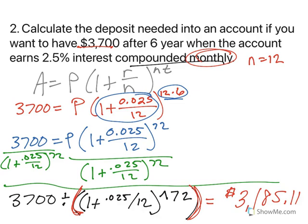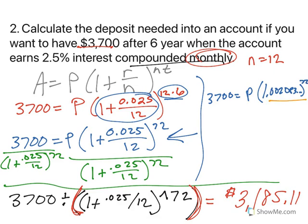Now, let's go back to the blue line here. If you simplify what's inside, you're going to get 3700 equals p times approximately 1.002083, da da da, raised to the 72nd power. If you then take that, keep it in your calculator, raise it to the 72nd power. Now we have 3700 equals p times 1.161652. Keep it all in there. We get our answer.